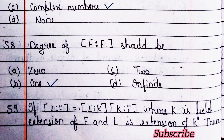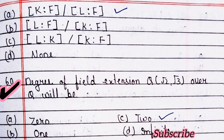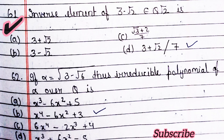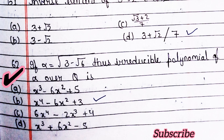Next question: if this equals this, where k is a field extension of F and l is an extension of k, then — option A is right. Next question: degree of field extension Q(√2, √3) over Q will be — option C is right. Next question: inverse element of this is — option D is right.